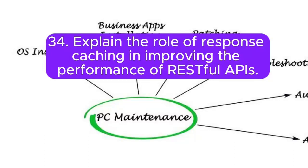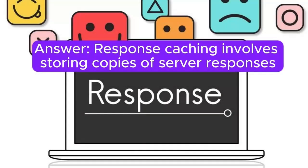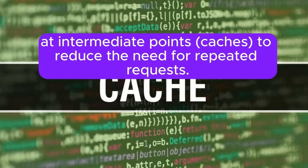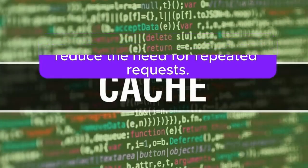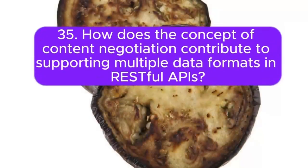Question 34: Explain the role of response caching in improving the performance of RESTful APIs. Response caching involves storing copies of server responses at intermediate points (caches) to reduce the need for repeated requests. It improves performance by reducing latency and server load.